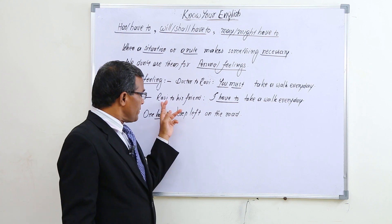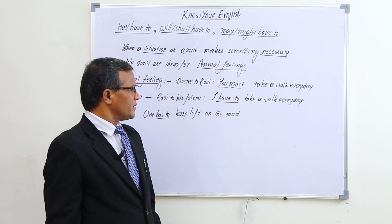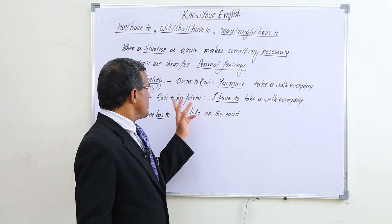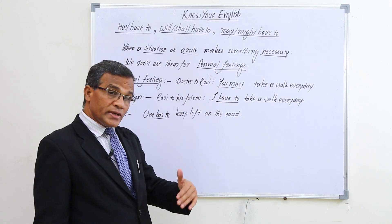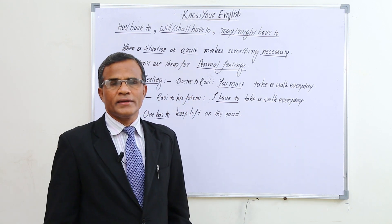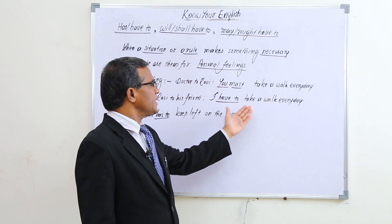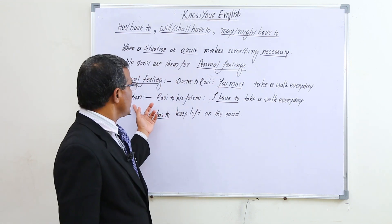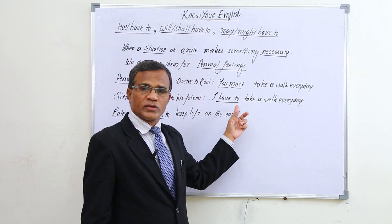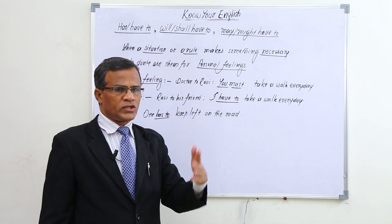But when Ravi tells his friend 'I have to take a walk every day,' this describes a situation — the doctor's suggestion. It is not Ravi's personal feeling; the situation requires it. So we use 'have to' for situation, and 'must' for personal feeling.